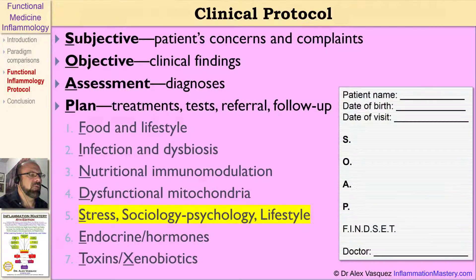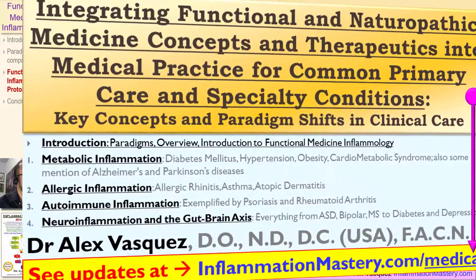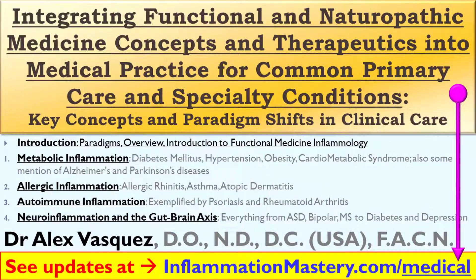So this was topic number four in my clinical protocol. We're now going to talk about stress, sociology, and style of living — special considerations that all start with S. Style of living for lifestyle, stress — we want to help our patients reduce their stress, manage it better, and avoid the causes or sources of their stress. Psychosociology, including politics. Sleep, quantity and quality. Sweat, as a metaphor for exercise. Spinal health, including osteopathic and chiropractic manipulation or adjustments.